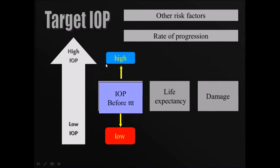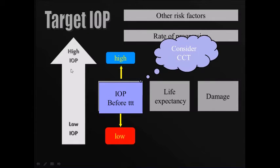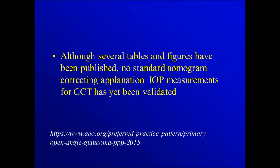On the other hand, if the IOP is high before starting treatment, then our target is a high IOP. You need to consider the central corneal thickness when you're thinking about the IOP level. Although several tables and figures have been published, there is no standard nomogram correcting applanation IOP measured for central corneal thickness.